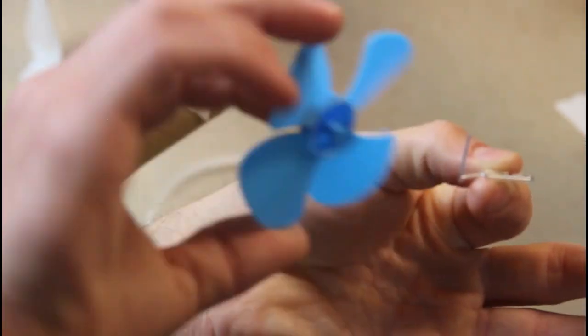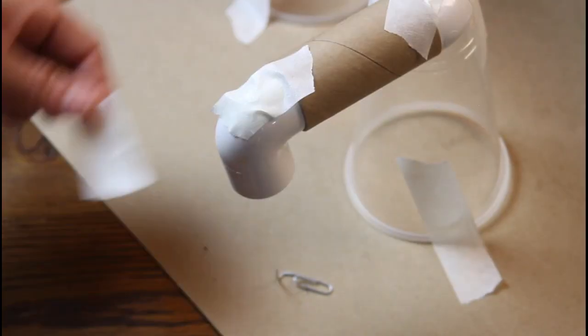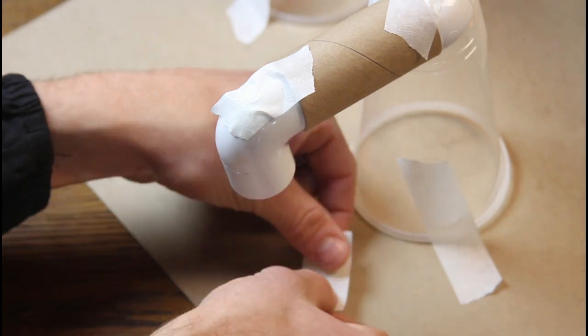Once you have them in your hands you'll see that the fans have a small hole on the back of them. That's where the piece of the paper clip is going to go. Go ahead and put it in there and give it a test spin before we actually implement it into the project.